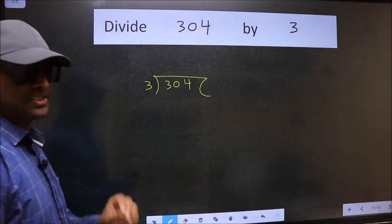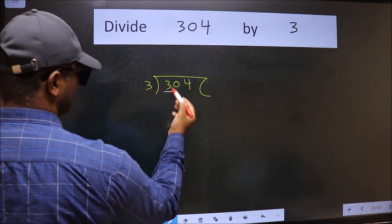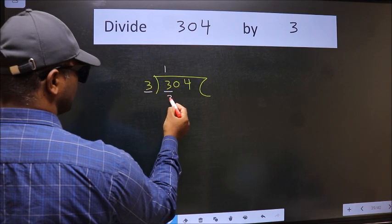This is your step 1. Next, here we have 3. Here also 3. When do we get 3 in 3 table? 3 times 1 is 3.